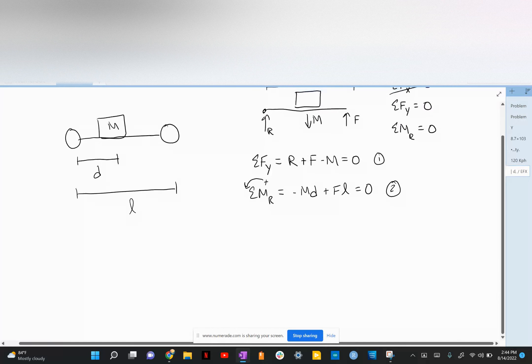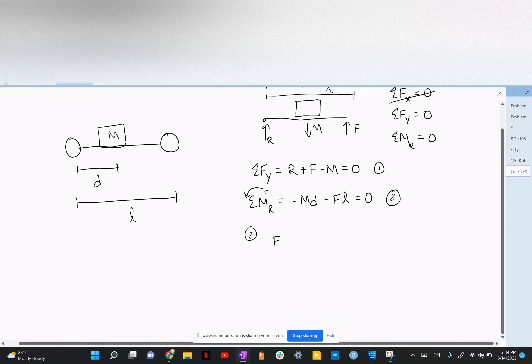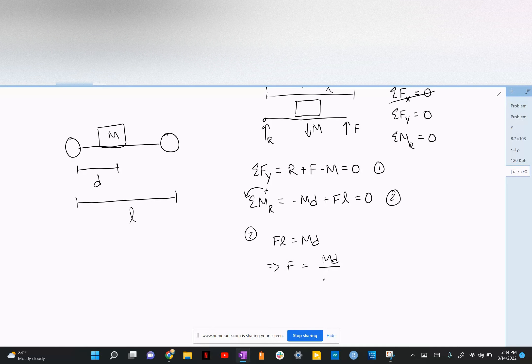From this bottom equation, equation two: FL is equal to MD. Therefore, F is equal to MD over L.